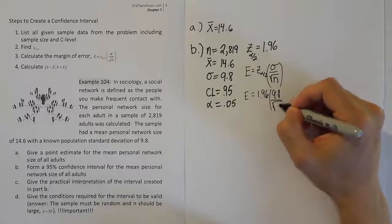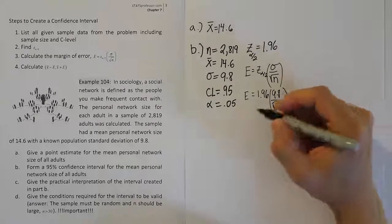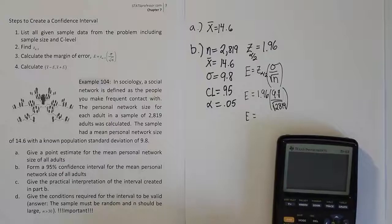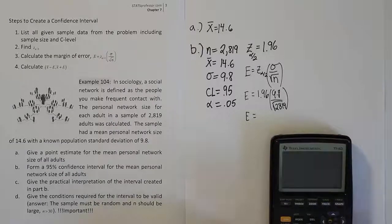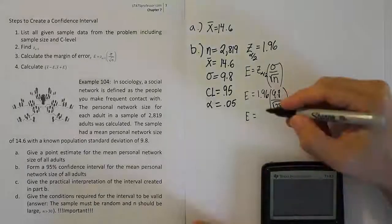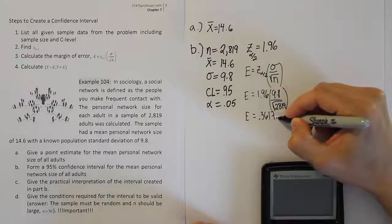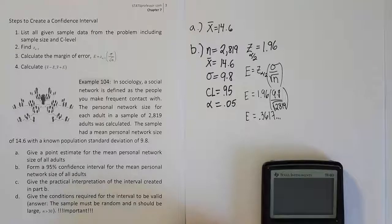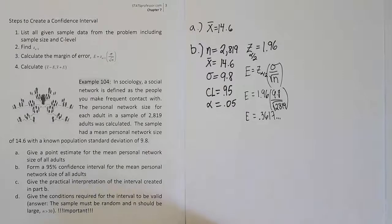If I enter all that into the calculator, I'm going to start out with 1.96 times 9.8 divided by the square root of 2,819. Close that up, hit enter, and we'll have our answer: 0.3617, and so on. It's going to go on forever. I'll actually store that in my calculator so I have it for later. I don't like to round until the very last step of the process.